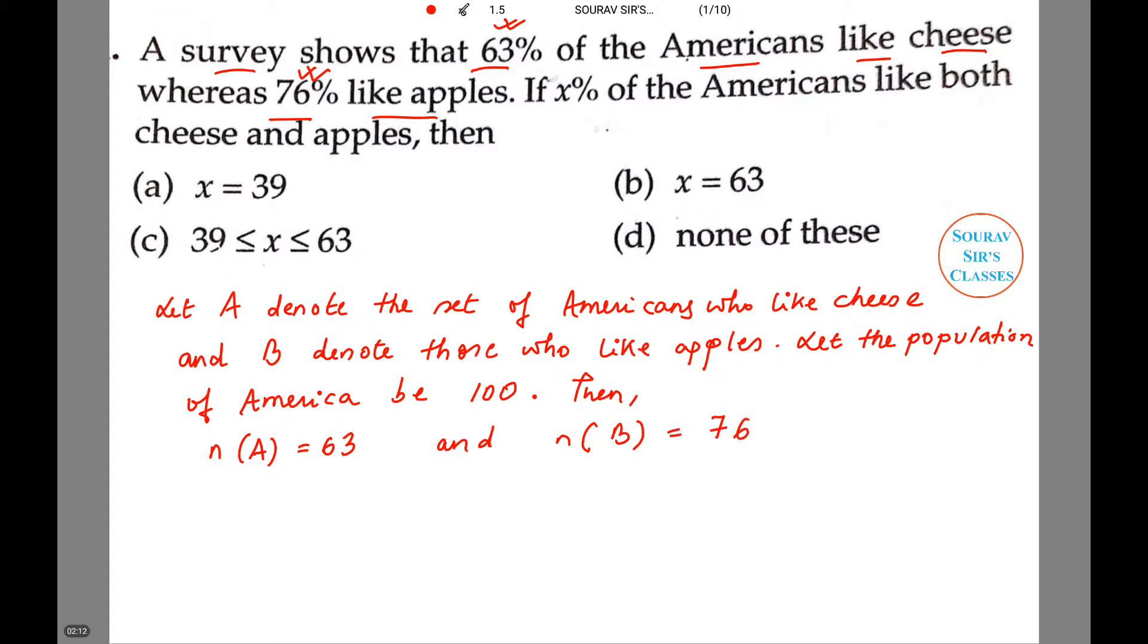Let us read the second half of the question. Now if x% of Americans like both cheese and apple, then we need to choose the appropriate option. So now let us see what will be the union of these two sets. Now n(A∪B) can be rewritten as n(A) + n(B) less the intersection part of the two sets.